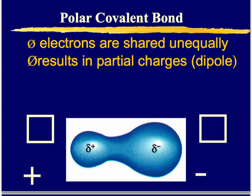A polar covalent bond is where electrons are being shared unequally, resulting in a partial charge — sometimes referred to as a dipole. There's a delta-positive on one end and a delta-negative on the other. The blue shaded area, representing where electrons are traveling, is not of equal size — the electrons spend more time on the negative end, making it larger and more negative. The other end has fewer electrons, making it more positive.